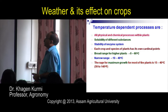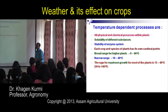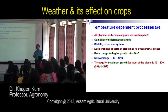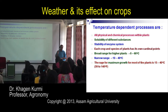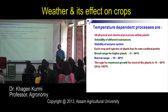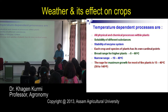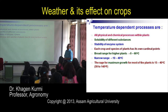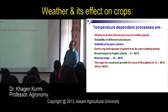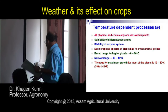Each crop and species has its own cardinal points. Temperature is not fixed — it changes, and each crop is suited to a particular temperature range. Those temperatures are divided into three: minimum, optimum, and maximum. Within that range, activities occur; you can expect potential yield when temperature is in the optimum range. These minimum, optimum, and maximum points for a particular crop or variety are called cardinal temperatures, and they vary according to the crop.